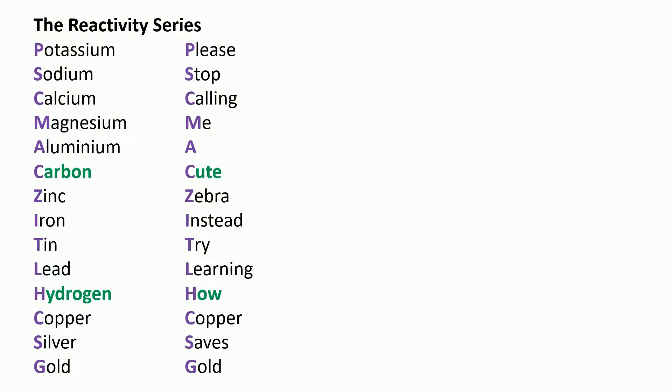When you look at the results of all these different reactions you can put the metals in order of reactivity and we call that the reactivity series. We've got potassium at the top which is the most reactive and we've got gold at the bottom as that's the least reactive. I've also included a rhyme on the right hand side to help you remember the order of metals in the reactivity series.